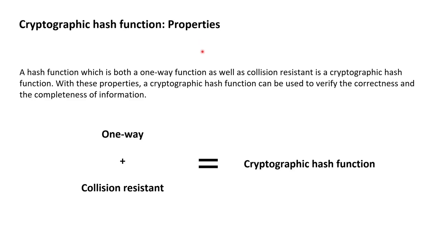If that's the case for a hash function, then the hash function is called a collision-resistant hash function. It is these two properties — being one-way and collision-resistant — that turns a hash function into a cryptographic hash function that can be used for integrity-related cryptographic purposes.